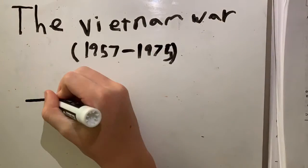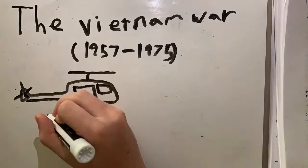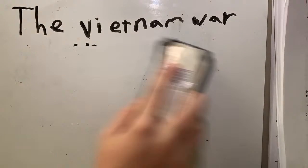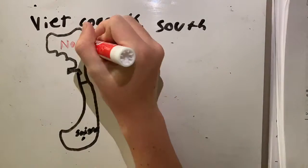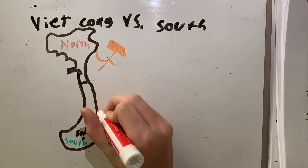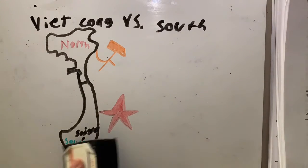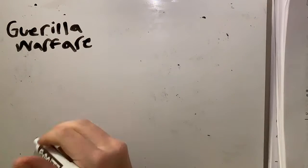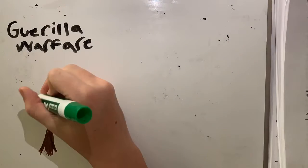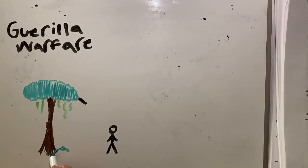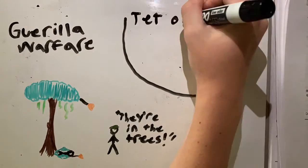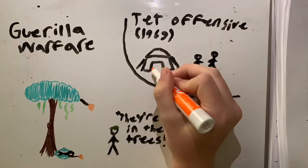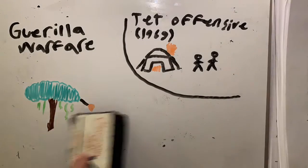Next we move on to the Vietnam War, which was a conflict hoping to stop the spread of communism within South Vietnam. The Viet Cong, led by Ho Chi Minh, were communist and had aid from Russia and China, while the South was capitalist and had aid from the US. The Viet Cong relied on guerrilla warfare, hiding in trees and bushes and ambushing US patrols. They did this in famous attacks such as the Tet Offensive, which brought major attention to the war and was a major controversy to US citizens.